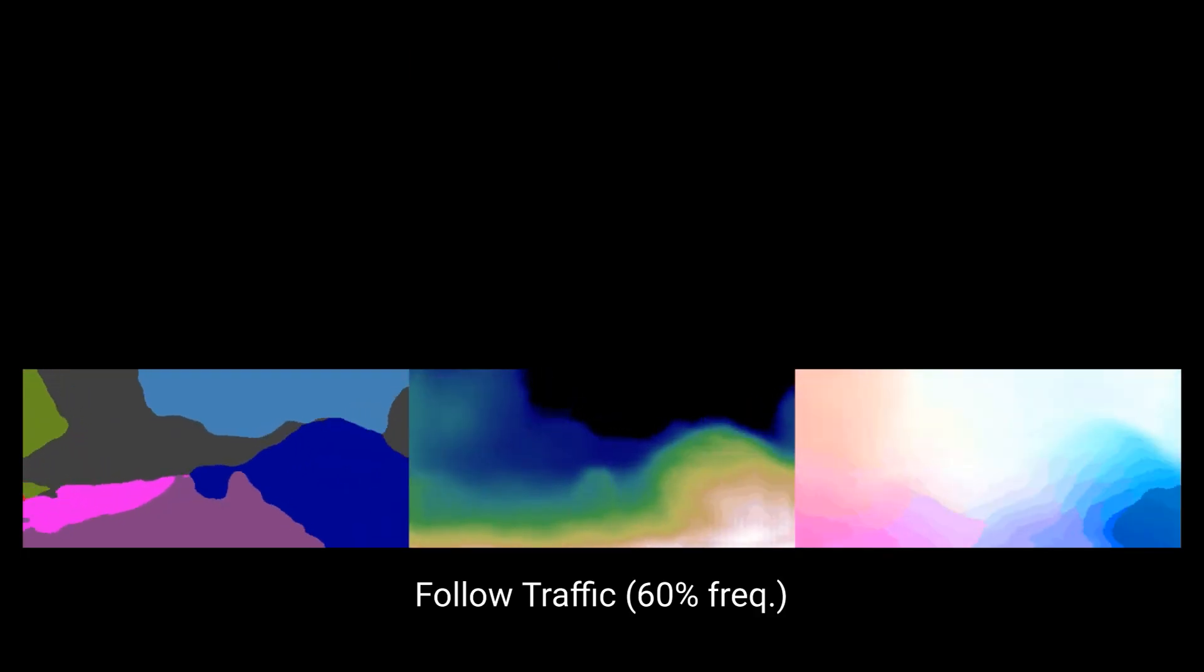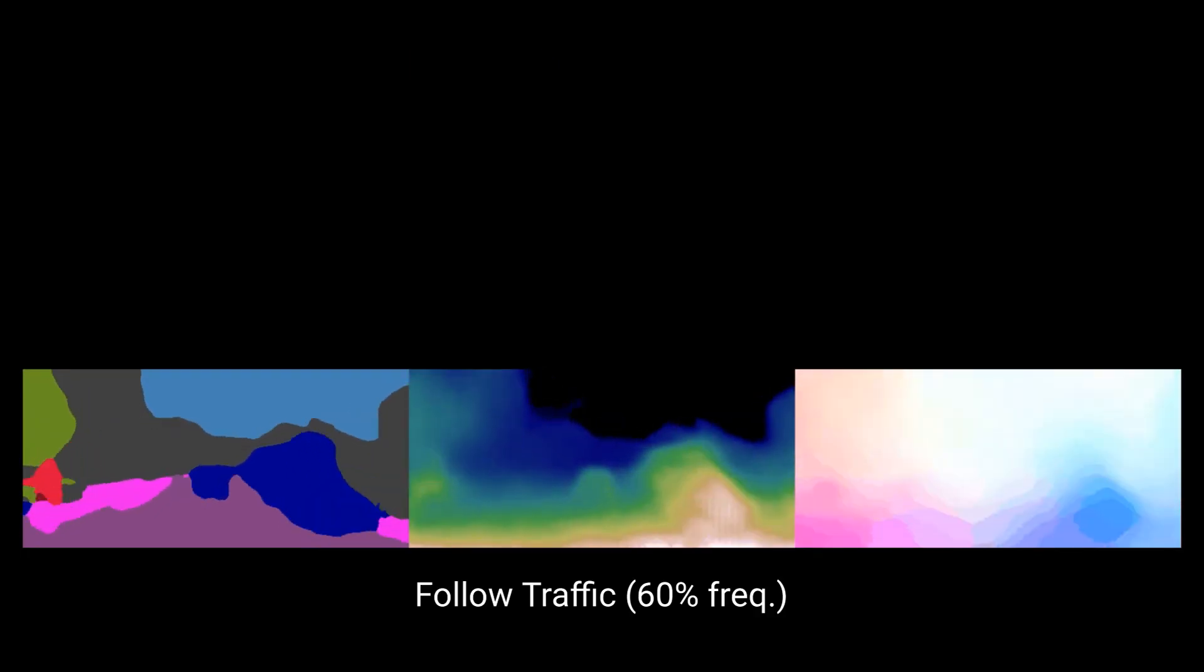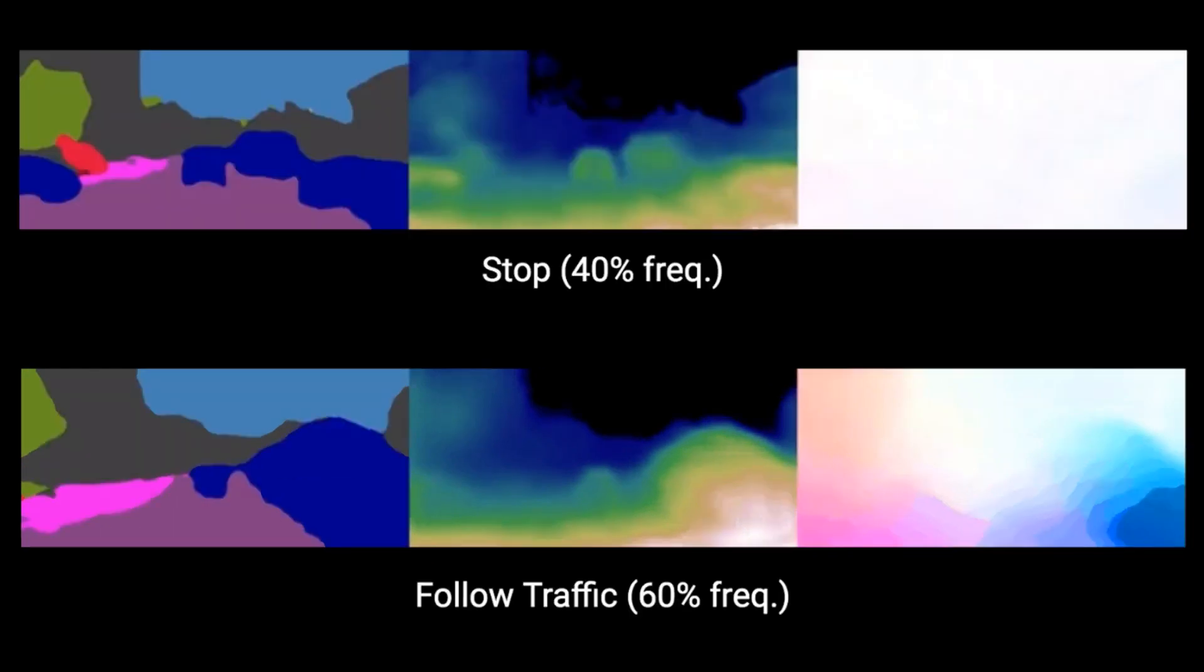We now show the depth and flow, as well as the segmentation. We observe the model imagining either stopping in traffic roughly 40% of the time, or continuing straight, 60% of the time. This illustrates our model's efficacy at jointly predicting holistic feature behavior of our own vehicle and other dynamic agents in the scene across many modalities.